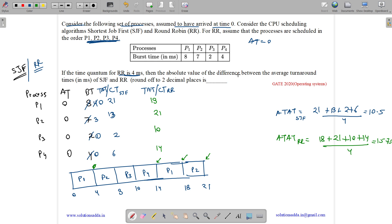Now we have to find the difference among average turnaround time of SJF and round robin, which means we need to find the modulus value of 10.5 minus 15.75. So it comes out to be 5.25. So answer to this question is 5.25.